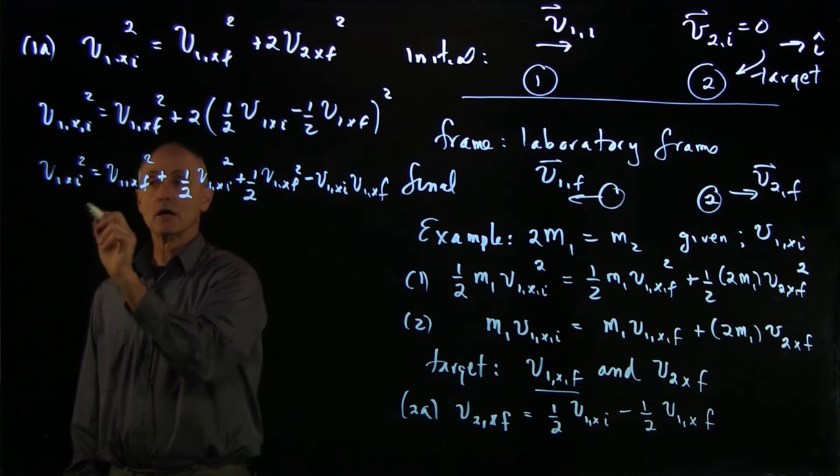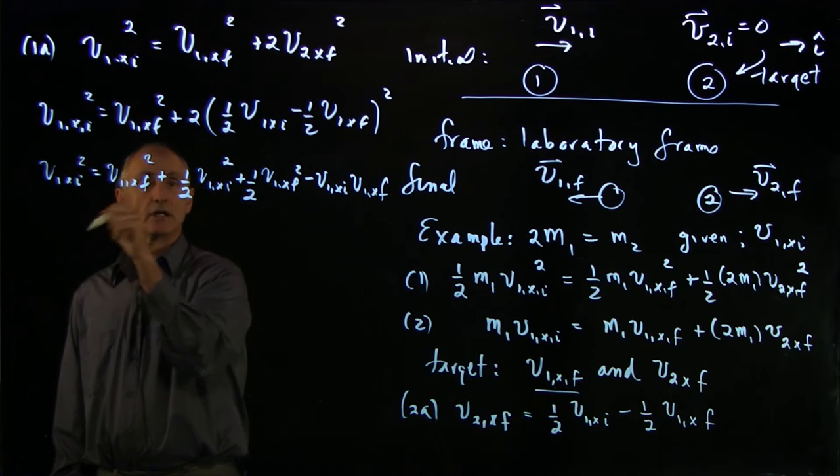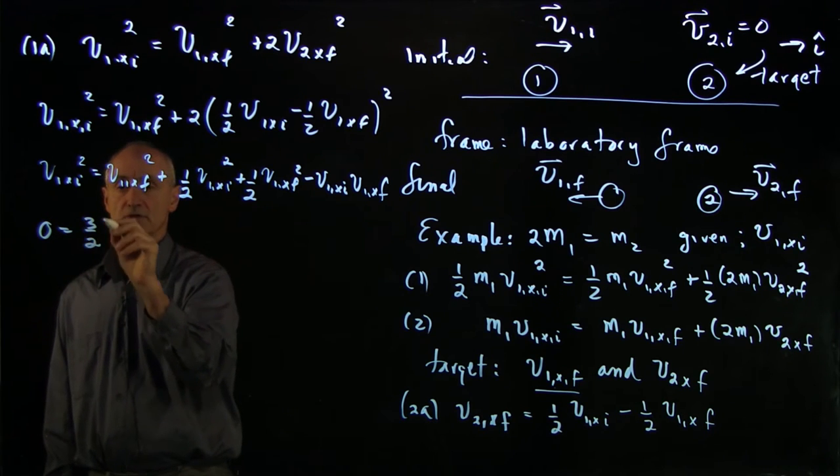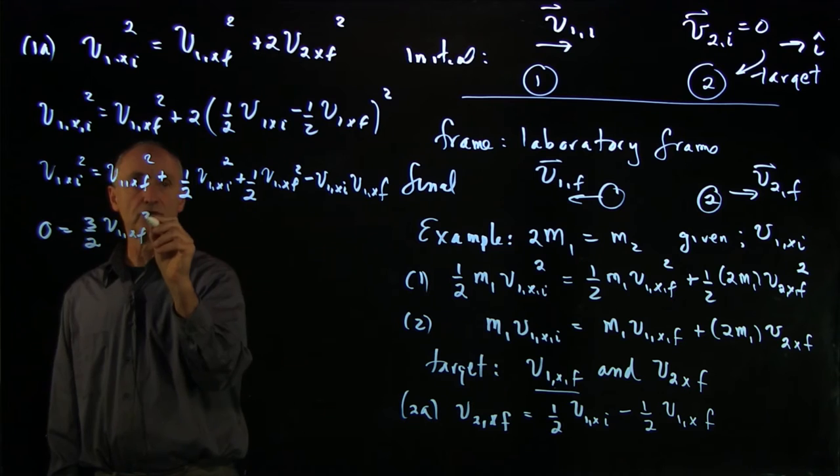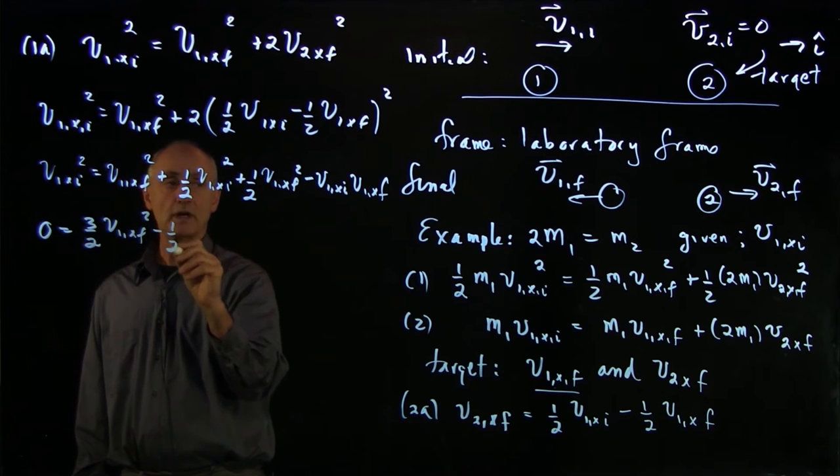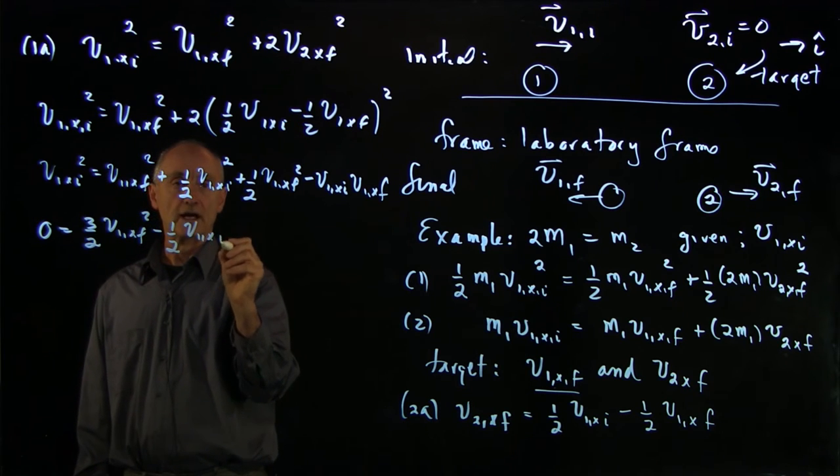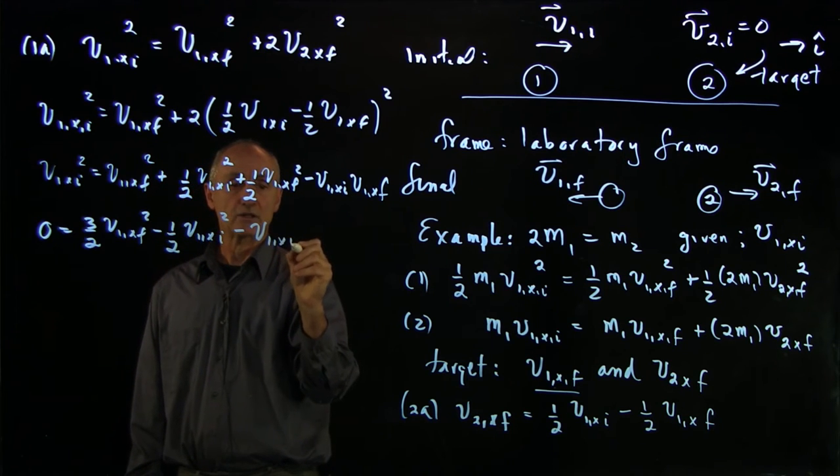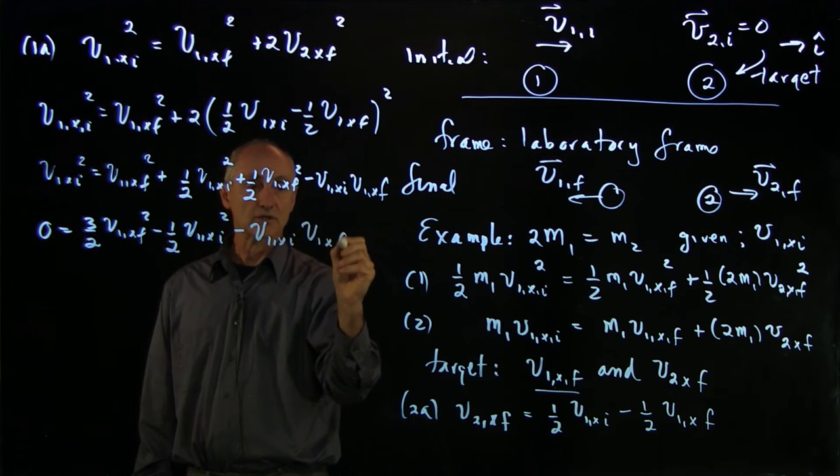Let's collect terms. Let's bring everything over to this side. So we have 0 equals 3/2 v1x final squared minus 1/2 v1x initial squared and minus v1x initial v1x final.